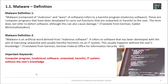Let's start with two definitions of malware. The first one is from a German dictionary and the second one is from the German Federal Office for Information Security, BSI. As a hint, the complete lecture I gave in German and I translated it for you to English. Malware, composed of 'malicious' and 'ware' of software, refers to a harmful program called malicious software — computer programs developed to carry out functions that are unwanted or harmful to the user. The term does not refer to defective software, although this can also cause damage.